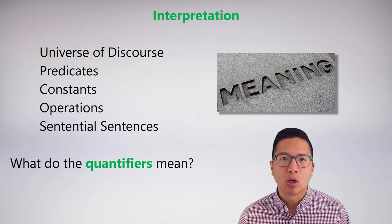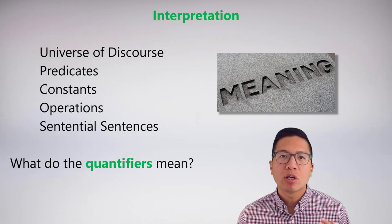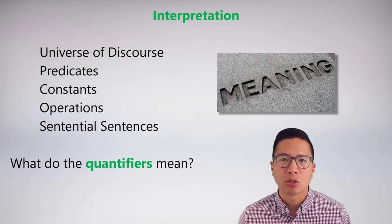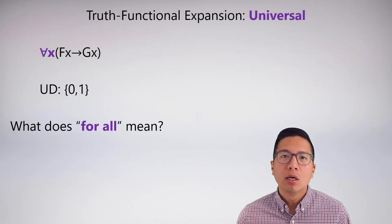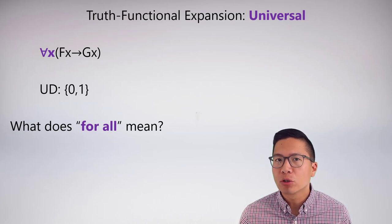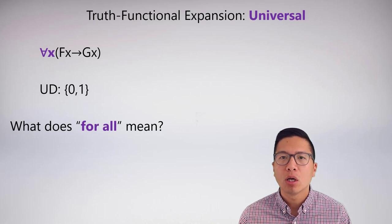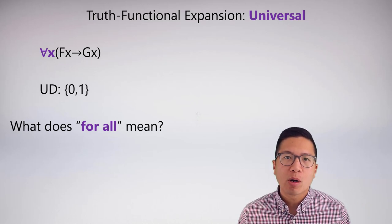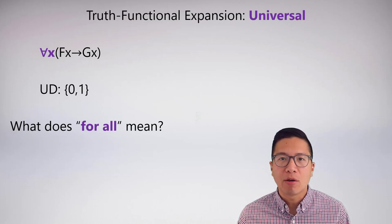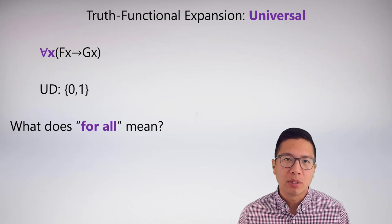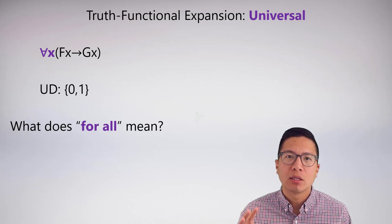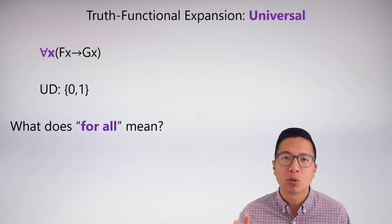We intuitively know what 'for all' and 'there exists' mean, but it turns out we can actually make this quite explicit by doing a truth functional expansion. We're going to do a truth functional expansion on a universal statement: for all x, Fx arrow Gx. We know from our previous lecture that this has an easy abstract translation—if you're an F, then you're a G—which means all F's are G's.